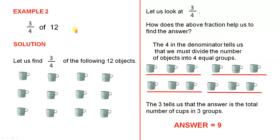Example 2: 3 quarters of 12. Let us find 3 quarters of the following 12 objects. Here's our fraction of 3 quarters. How does the above fraction help us to find the answer? The 4 in the denominator tells us that we must divide the number of objects into 4 equal groups. Now, we've done that.